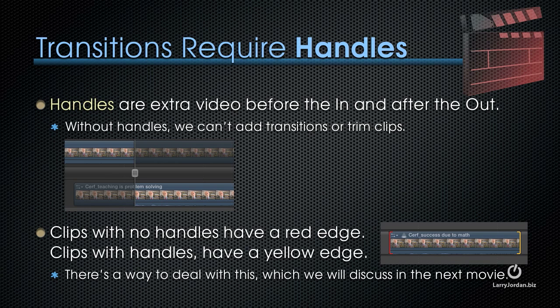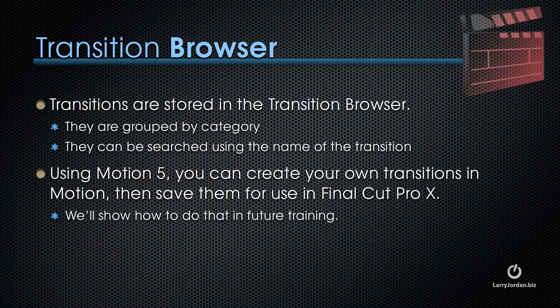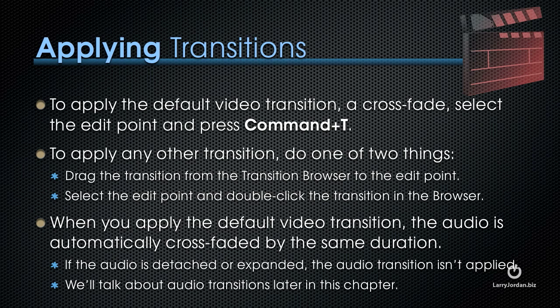There's a way to deal with clips that have no handles, and we'll discuss that in the next movie. Transitions are stored in the transition browser, grouped by category and searchable by name. A neat new feature is that you can create your own transitions and save them in the transition browser for later use. To apply the default video transition, which is a crossfade, select the edit point and press Command-T. To apply any other transition, either drag the transition from the transition browser to the edit point, or select the edit point first, then double-click the transition in the transition browser. When you apply the default video transition, the audio is automatically crossfaded by the same duration. However, if the audio is detached or expanded, this audio transition is not applied.